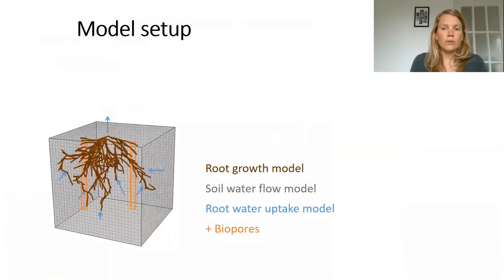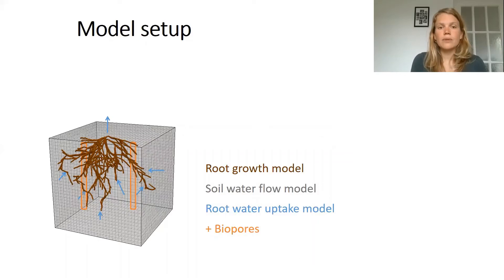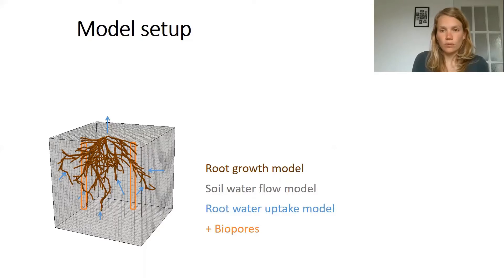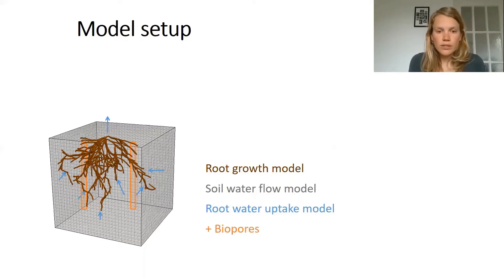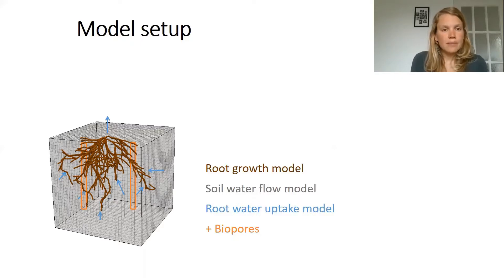The model we used was the RSWIMS model. RSWIMS combines a root growth model with a soil water flow model and a root water uptake model. Combining means that the root growth is influenced by the soil moisture conditions. For the root water uptake, the transpiration demand is set at the root collar and depends on the atmospheric conditions.